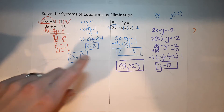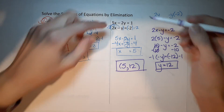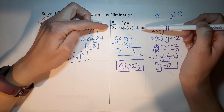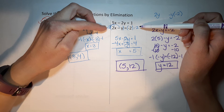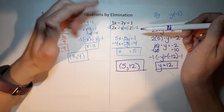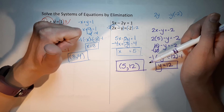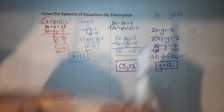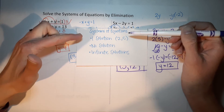You can always plug the answer back in to make sure it works. Also, multiplying by negative two wasn't the only way to get things to cancel — if you found another way and it worked, that's great. There's more than one way.